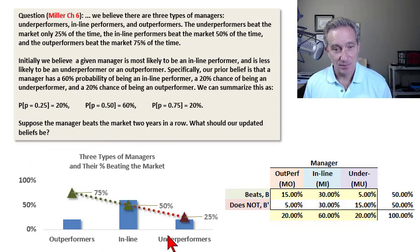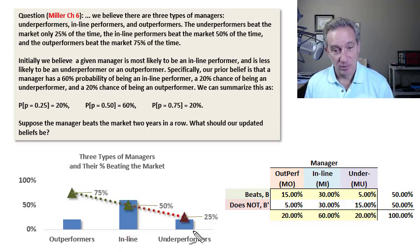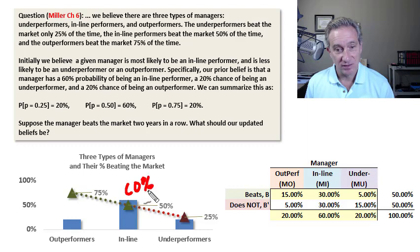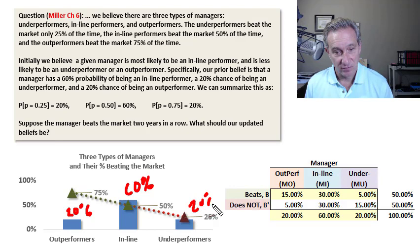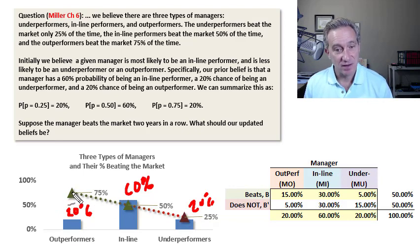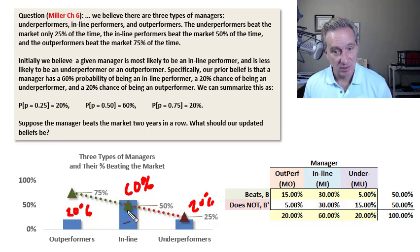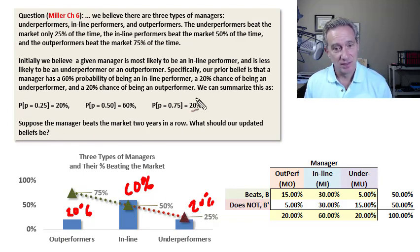I drew a chart here to capture this. We have the prior belief about whether the manager is an outperformer, inline performer, or underperformer. Any given manager has a 60% probability of being an inline performer and a 20% probability of being either an outperformer or underperformer. If the manager is an outperformer, they have a 75% probability of beating the market. If inline, it's 50%, and if an underperformer, a 25% probability of beating the market.